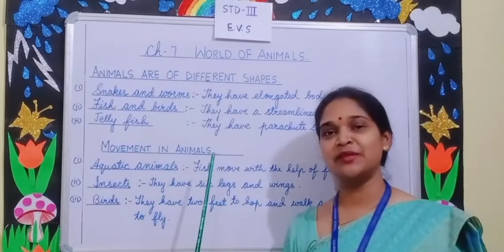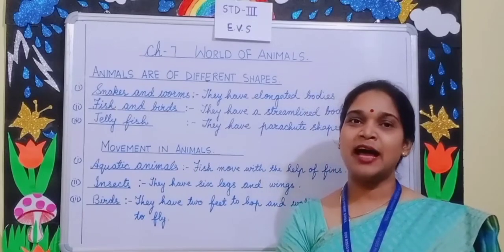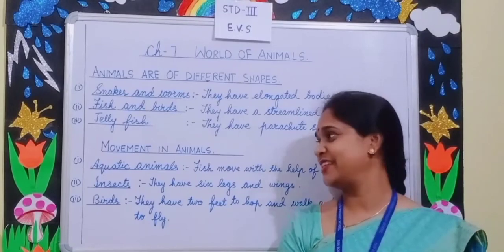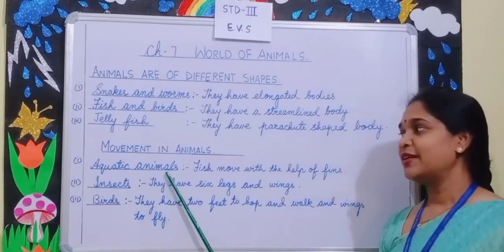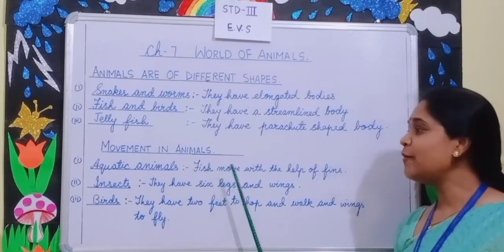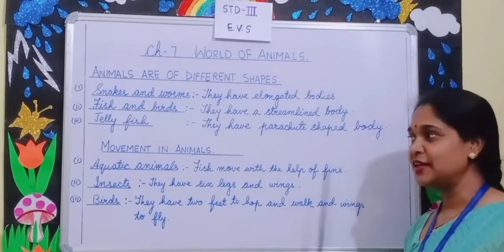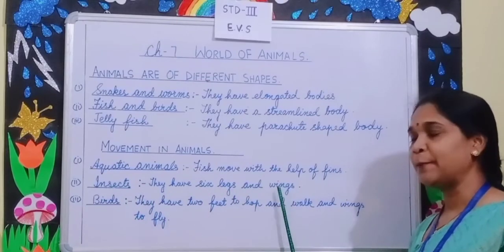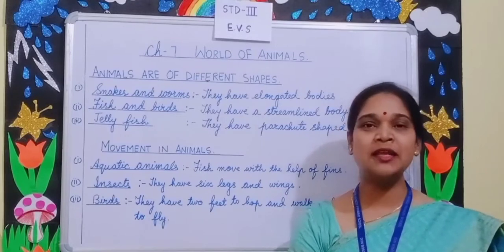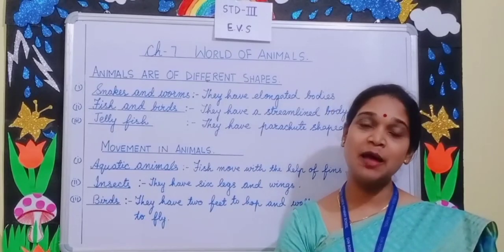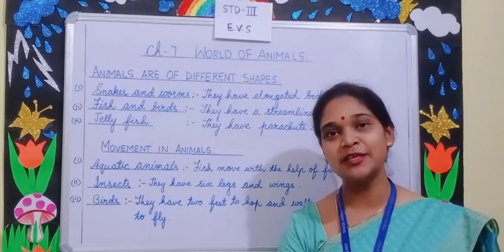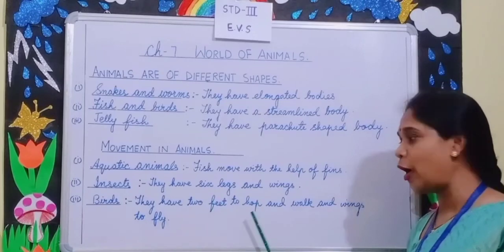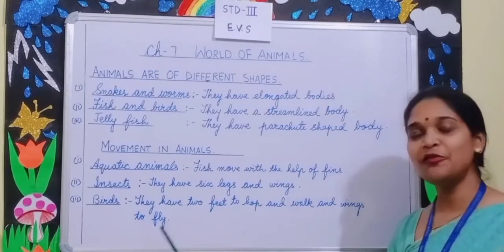Movement in animals. All animals have certain special features that help them in their movement. Aquatic animals like fish move with the help of fins. Insects have six legs and wings — some insects have only six legs, but there are some that also have wings to fly. Birds have two feet to hop and walk, and wings to fly.